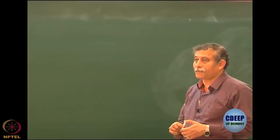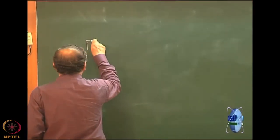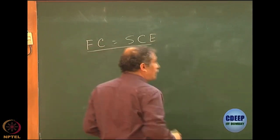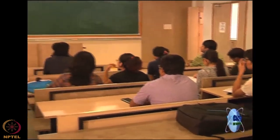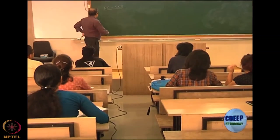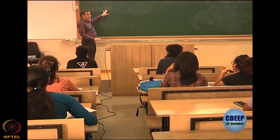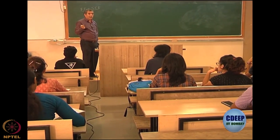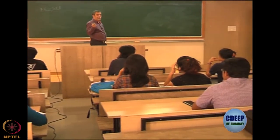We come back to the problem of Hartree-Fock. We had derived the Hartree-Fock-Roothaan equation as FC equal to SCε. The input matrices are all in terms of atomic orbitals. If I have integrals in terms of the atomic orbitals, I can construct F. However, F will depend on the coefficients, or what we call the charge density bond order matrix, which is actually related to the coefficients.